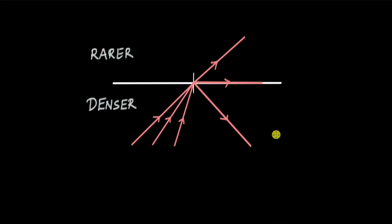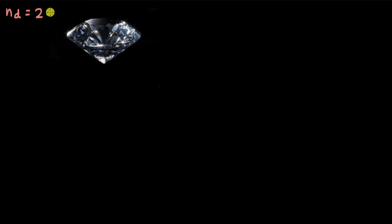Now let's have a look at what happens inside diamonds. One important piece of information to begin with is the refractive index of diamond, which is approximately 2.42. If we know the refractive index of diamond, we can figure out the critical angle of the diamond-air interface using Snell's law.